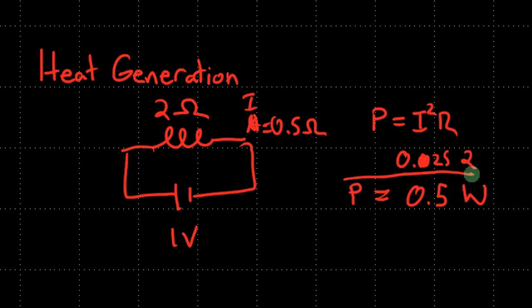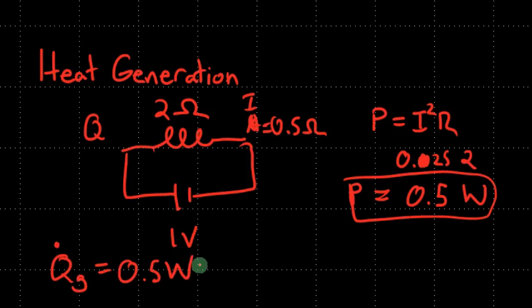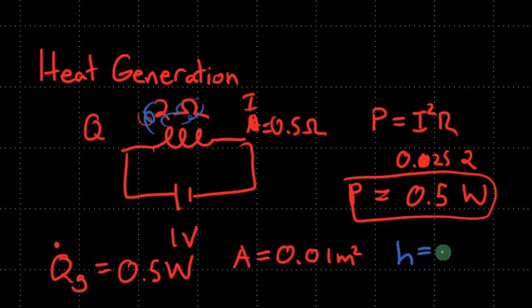So we call this power, but in reality, this is heat generated. This coil is now getting hot. We're going to have the heat generated is Q, let's call this Q_G. And it's being generated at a rate which is the power, 0.5 watts. For argument's sake, let's say the area of this coil is equal to 0.01 meters squared. It's going to cause some natural convection here. And the natural convection coefficient is going to be about 10, and this is generally true.